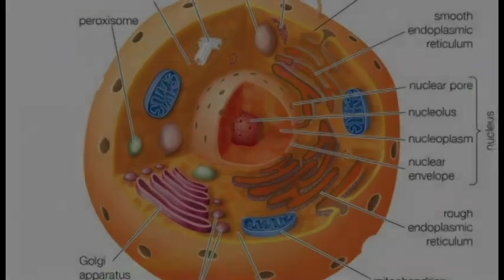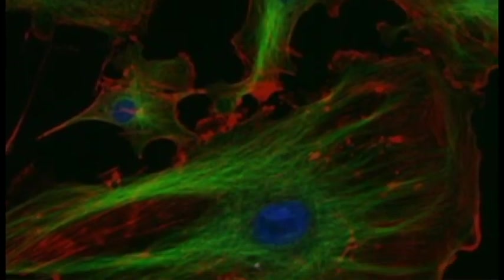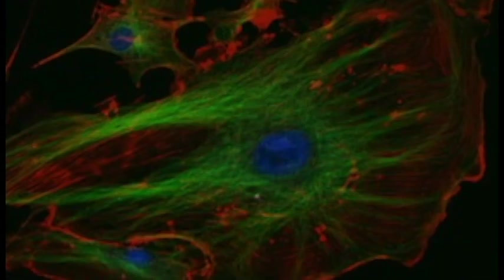The cytoskeleton, composed of tubes and fibers, is present in the cytoplasm of the cell. It retains the shape of the cell, along with allowing the organelles to move within it.